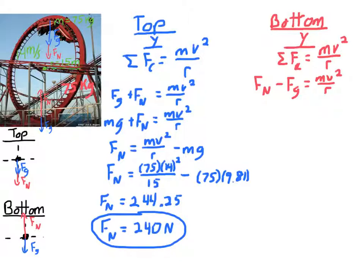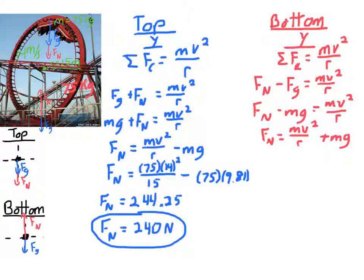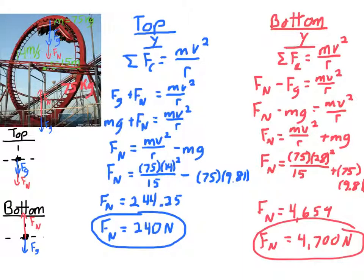Plugging v = 28 m/s into the bottom-of-loop equation, normal force is now added to gravity: N − mg = mv²/r, so N = mv²/r + mg. Unlike the top, gravity fights against normal force, so normal force must be even greater. Going through the calculation with m = 75 kg gives an apparent weight of about 4,700 Newtons. Normal weight is about 750 N, so this is roughly six times — meaning this person pulled 6 G's, which would likely cause them to pass out. Most riders can handle about 5 G's.